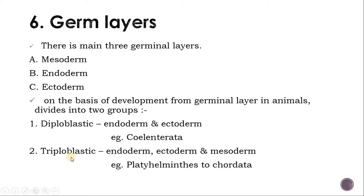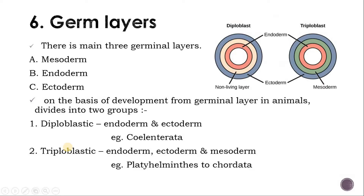What is triploblastic? 'Tri' means three and 'blastic' means germinal layer. The animal develops from three germinal layers: endoderm, ectoderm, and mesoderm. Examples from Platyhelminthes to higher chordates originate from these three germinal layers: endoderm, ectoderm, and mesoderm.